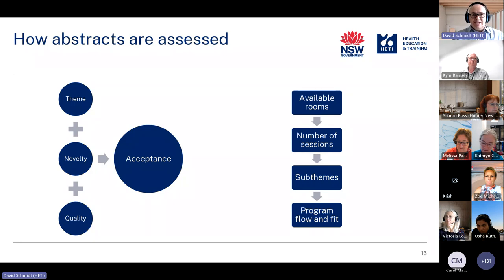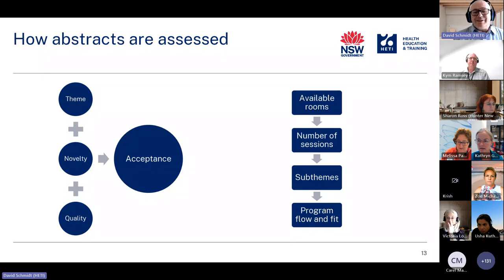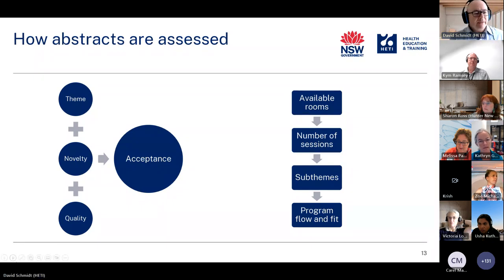In terms of how many abstracts come in versus how many get accepted, it varies from conference to conference. For a big national conference with 300 sessions to fill, there might be a lot of abstracts coming in but also a lot of places to offer. A smaller conference might have fewer people applying but tighter spaces available.